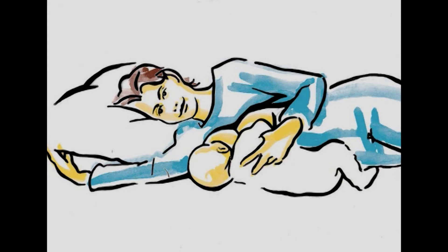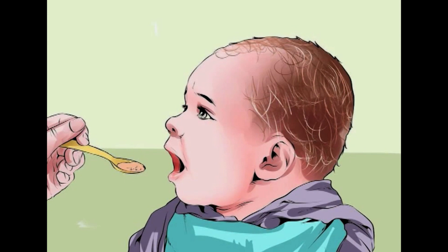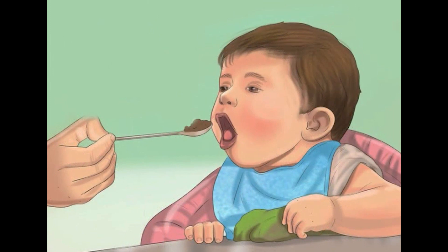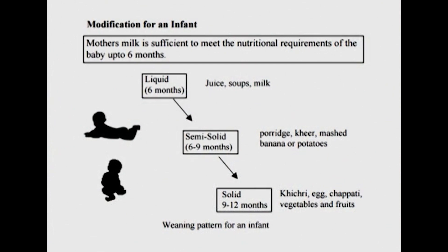Modification of diet for an infant: Mother's milk is sufficient to meet the nutritional requirements of a baby only up to 6 months. After 6 months, the baby can be given liquids like juice, soups, and milk. From 6 to 9 months, semi-solid foods can be included like porridge, kheer, mashed banana, and mashed potatoes. From 9 to 12 months, solid foods can be included like khichdi, egg, chapati, vegetables, and fruits.